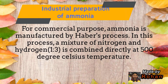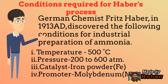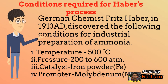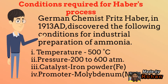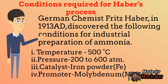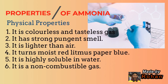Industrial preparation of ammonia: for commercial purposes, ammonia is manufactured by the Haber process. In this process, a mixture of nitrogen and hydrogen in ratio 1:3 is combined directly at 500°C. Conditions required: temperature 500°C, pressure 200 to 600 atmospheres, catalyst iron powder (Fe), and promoter molybdenum (Mo). German chemist Fritz Haber discovered these conditions in 1913.